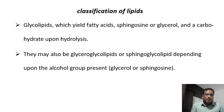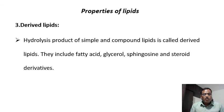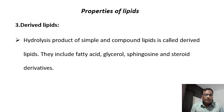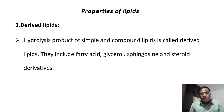Another example of compound lipids is glycolipids, where lipid molecules are associated with carbohydrates. They may be glyceroglycolipids or sphingoglycolipids depending on the alcohol group present. The third category is derived lipids — the hydrolysis products of simple and compound lipids. They may include fatty acids, glycerol, sphingosine, and steroid derivatives. One very important example of derived lipids is steroid hormones, which play a vital role in many body functions.